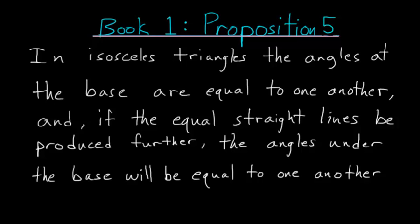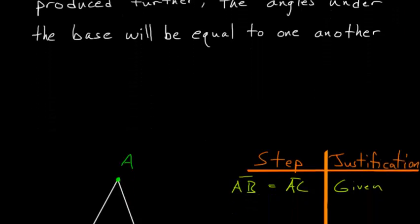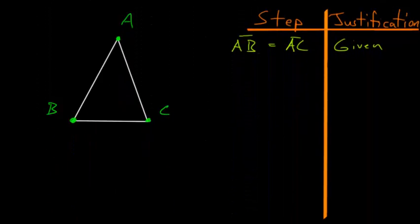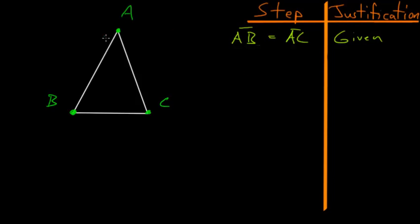Book 1, Proposition 5 of Euclid's Elements essentially focuses on the properties of isosceles triangles. In isosceles triangles, the angles at the base are equal to one another, and if the equal straight lines be produced further, the angles under the base will be equal to one another. We can start with a triangle ABC.